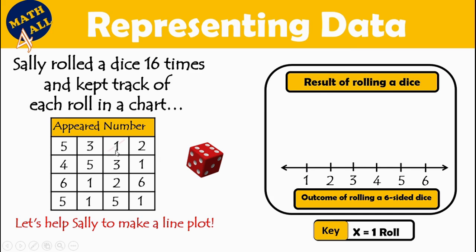Let's start from 1. How many times did number 1 appear? Let's count: 1, 2, 3, 4, 5 — number 1 appeared 5 times. Let's represent this data; each X will be 1 roll. Let's count: 1, 2, 3, 4, and 5.